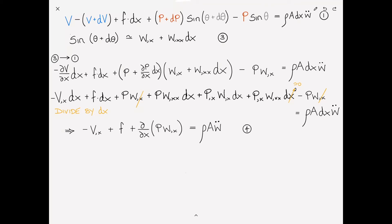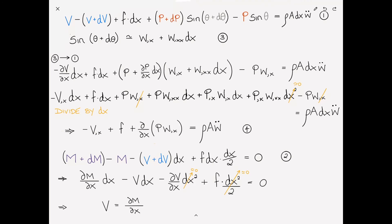From the previous page copying equation two down and simplifying, we expand it out. The M's cancel, dM becomes partial M partial X dx, minus V dx, minus partial V partial X dx squared. Plus F times dx squared over two equals zero. The last two terms cancel because they're higher order terms with dx squared in them. Finally, this gives us the very simple solution that V, the shear force, is just partial M partial X. We discovered this previously for the Euler-Bernoulli beam. Let's number this number five and put a box around these two.